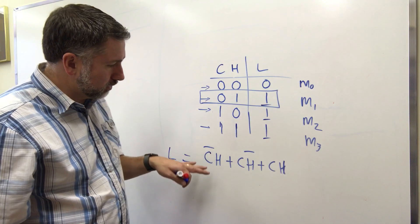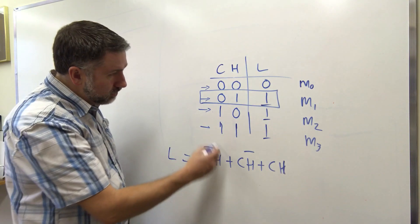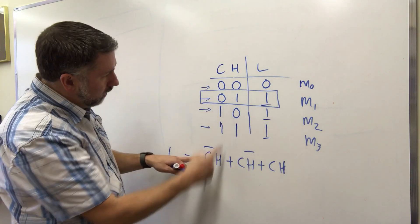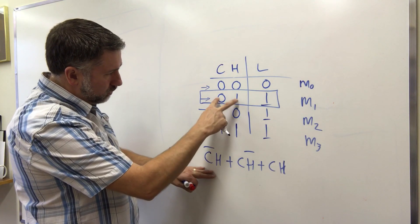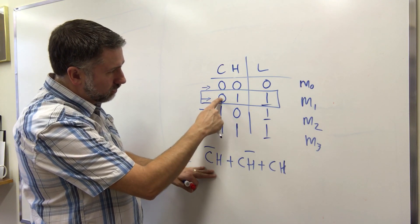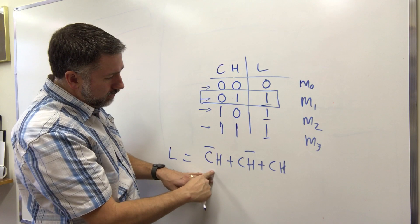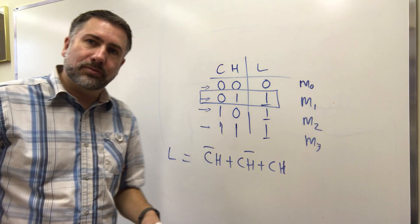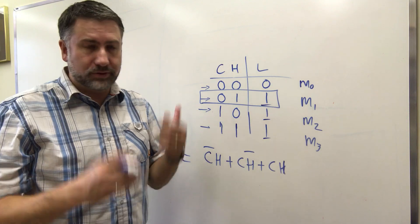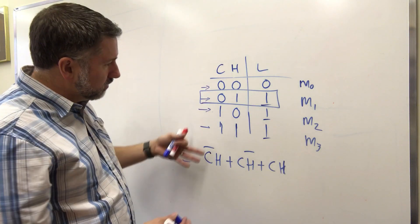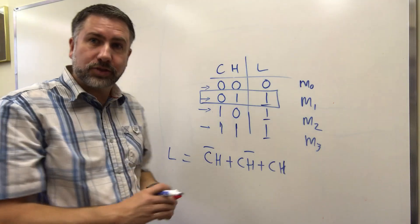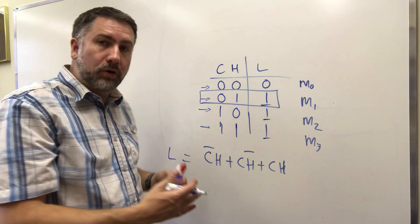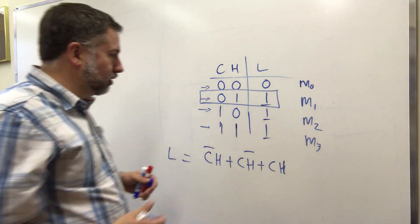So these are called minterms. And this minterm is indicated by or is equivalent to this set of inputs. So if C is 0 and if H is 1, this term is 1 and these are all 0. And that's the nice thing about minterms is only one of them can be active or equal to 1 at a time because of the way we've translated from the truth table into the expression. And that means we know exactly what's happening in that circuit.